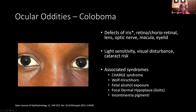Colobomas are where there's a defect in the iris such that instead of having a round pupil, you may see a slit pupil or cat-eye shape. It can be in any portion of the iris, unilateral or bilateral. These defects cause light sensitivity and increased risk for cataracts. We see colobomas as part of focal dermal hypoplasia, where patients also have Blaschkoid atrophic lesions on the skin. It can be a feature of incontinentia pigmenti, and has been reported after fetal alcohol exposure and in CHARGE syndrome.